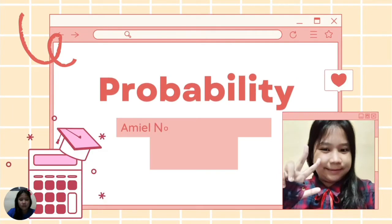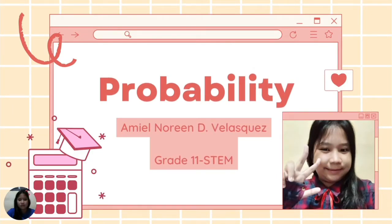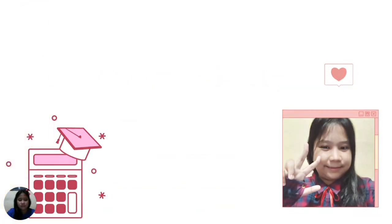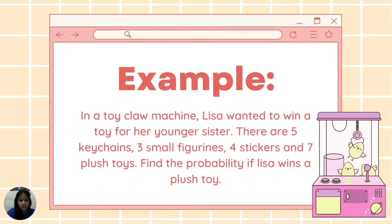Hello everyone, I'm Emil Nerindo Velasquez of Grade 11 STEM, and today I will be showing you my example of probability. Here's the example: In a toy claw machine, Lisa wanted to win a toy for her younger sister. There are 5 keychains, 3 small figurines, 4 stickers, and 7 flashcards. Find the probability if Lisa wins a flashcard.